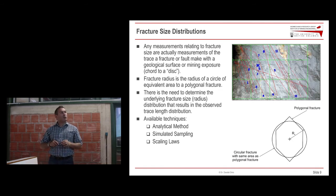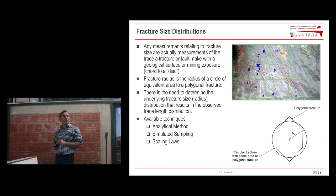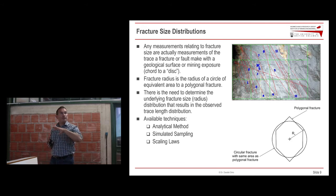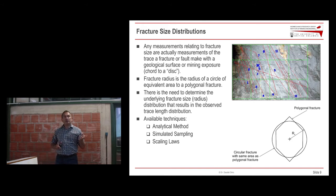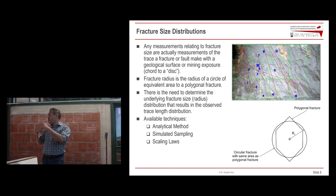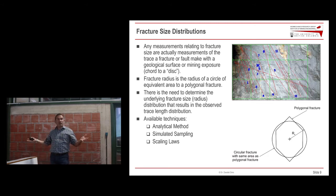If we have access to larger structures like major faults or intermediate features, we can use a scaling approach — characterizing the length at large, intermediate, and smaller scales and extrapolating back. We used this approach analyzing data from one of the largest open pit mines in the world, Chuquicamata. That mine is three kilometers wide in one direction, two kilometers wide in another, and one kilometer deep. So you have access to very large features that can be used to extrapolate data for smaller fractures.